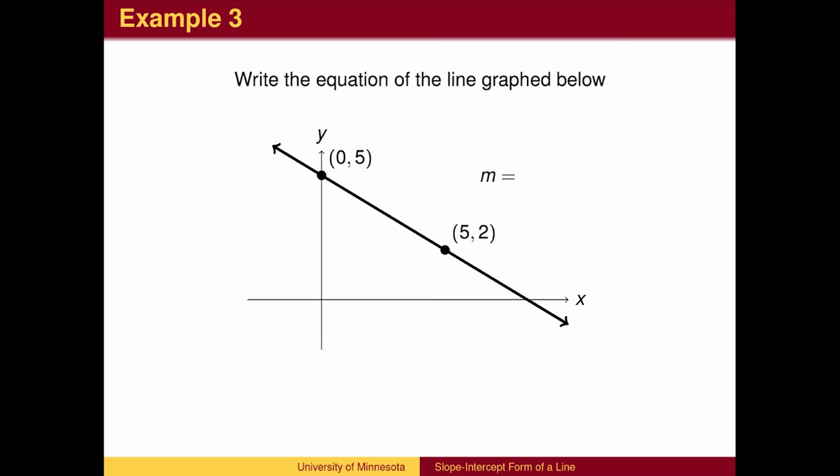Here, we are given the graph of the line, including the y-intercept. We first compute the slope using the slope formula. In this case, the slope is negative 3 fifths. So the slope-intercept equation of the line is y equals negative 3 fifths x plus 5.